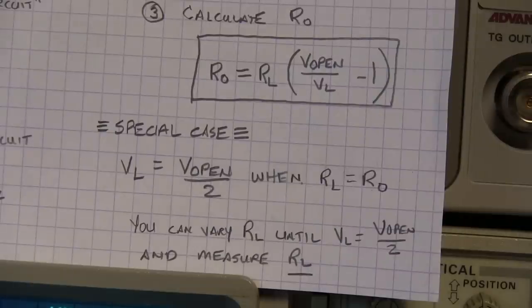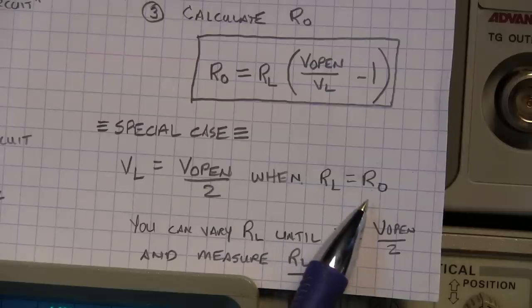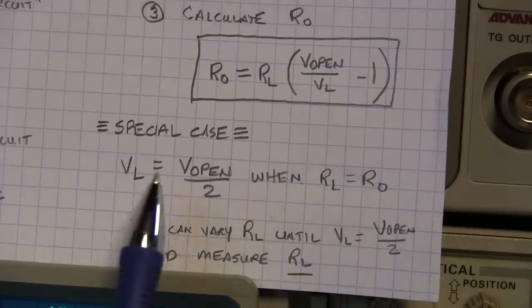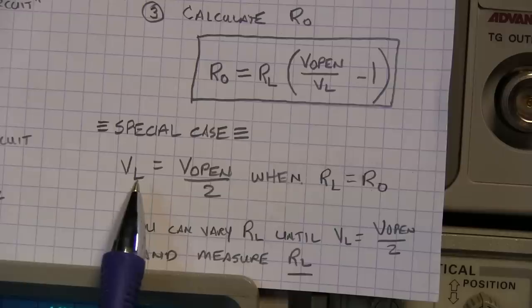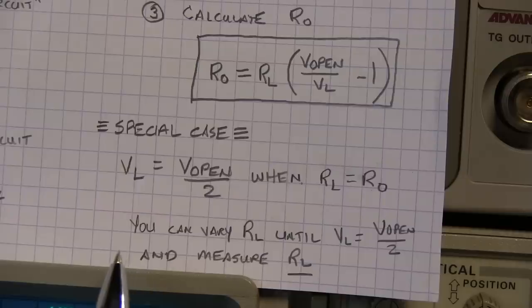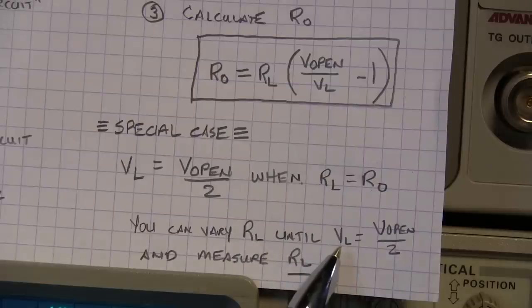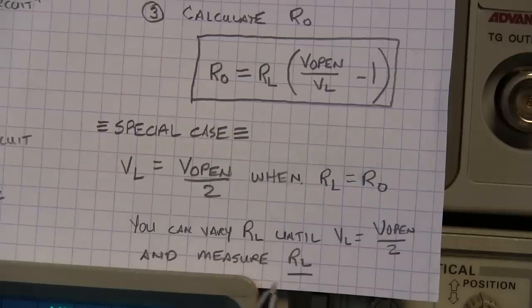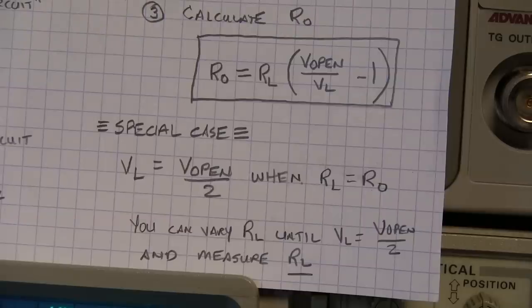Now there is a special case of this scenario that if the load impedance equals the output impedance then the output or loaded voltage is going to be equal to half of the open circuit voltage. So another way to measure the output impedance is to simply vary the load impedance until the loaded output voltage is equal to half of the open and then measure the load impedance that you've applied or look at what it is if you're using something like our resistor substitution box. So let's do that.